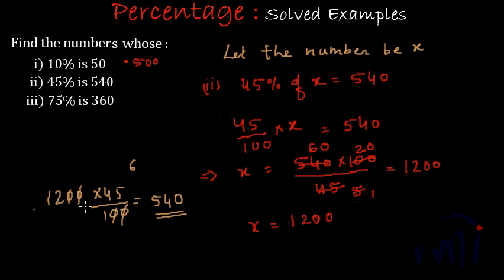So yes, this is the reverse check in which we are finding the 45% of 1200 and yes we got the value as 540. So in this case that number is 1200.